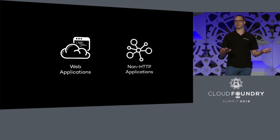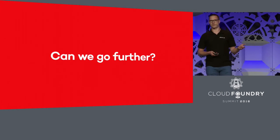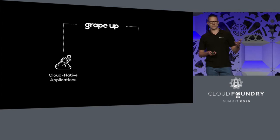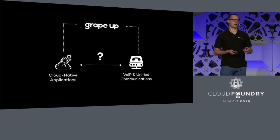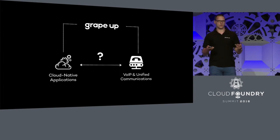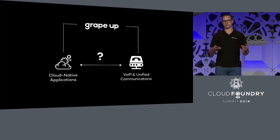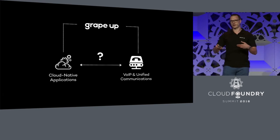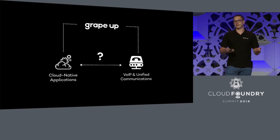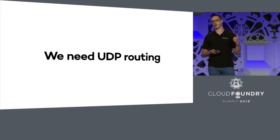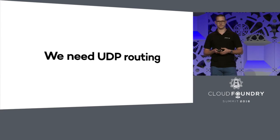We have a bunch of use cases and scenarios covered, but can we go further? This was the question we were asking ourselves at GrapeUp. As I mentioned, we do mostly cloud-native development, but we also have vast experience building VoIP and UC solutions. So we wondered: can we combine those two areas of expertise and use Cloud Foundry as a platform to build a VoIP solution? After initial research the answer seemed to be yes, but we were missing one major part — we needed UDP routing, because VoIP uses UDP for media transport in the first place.